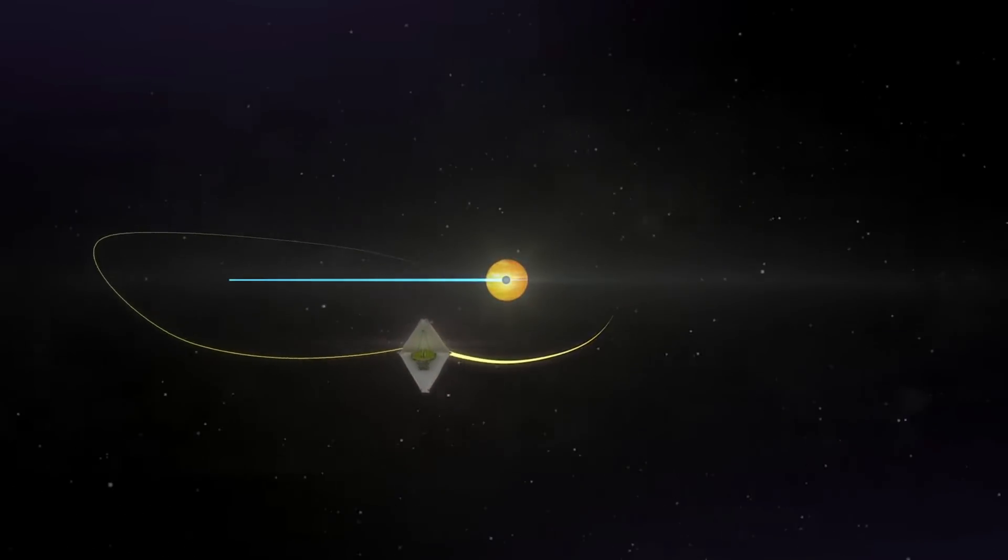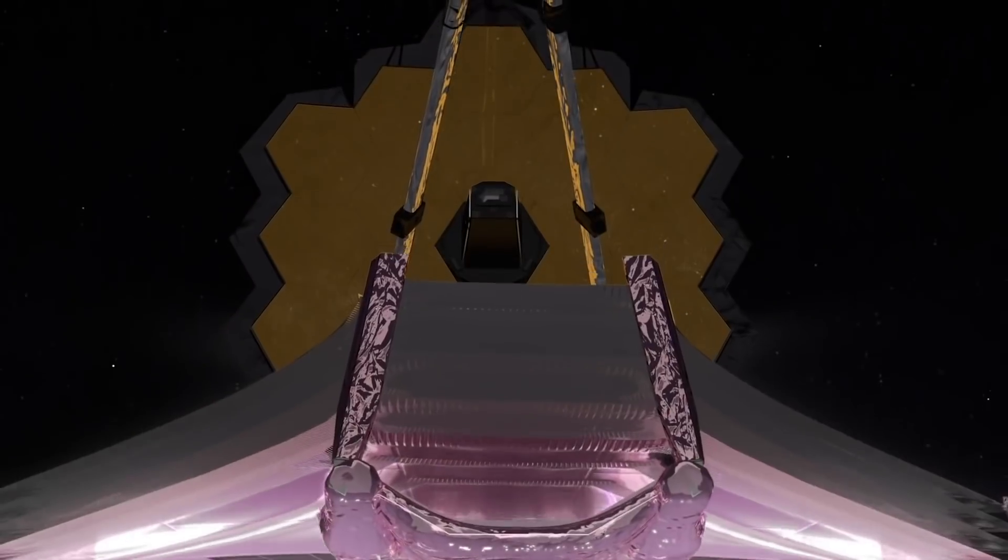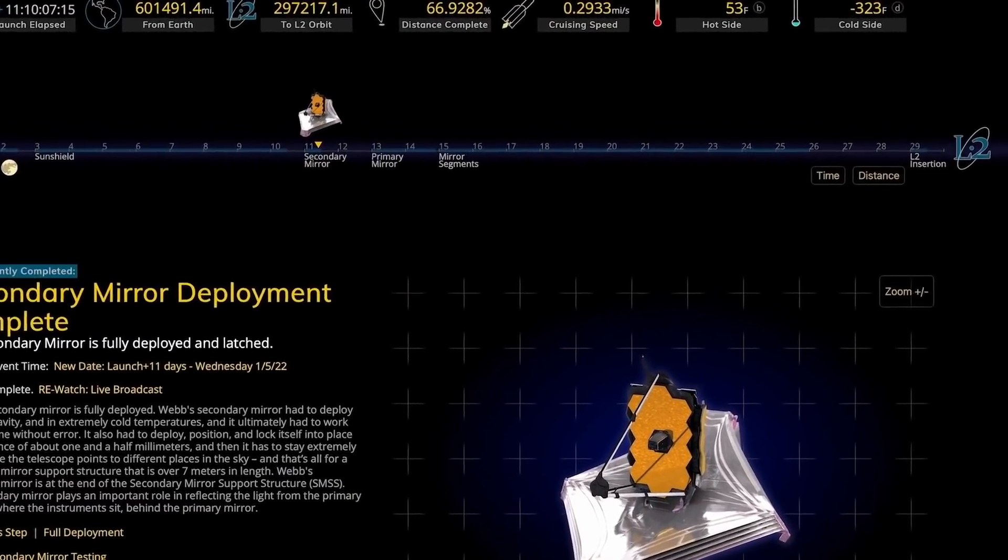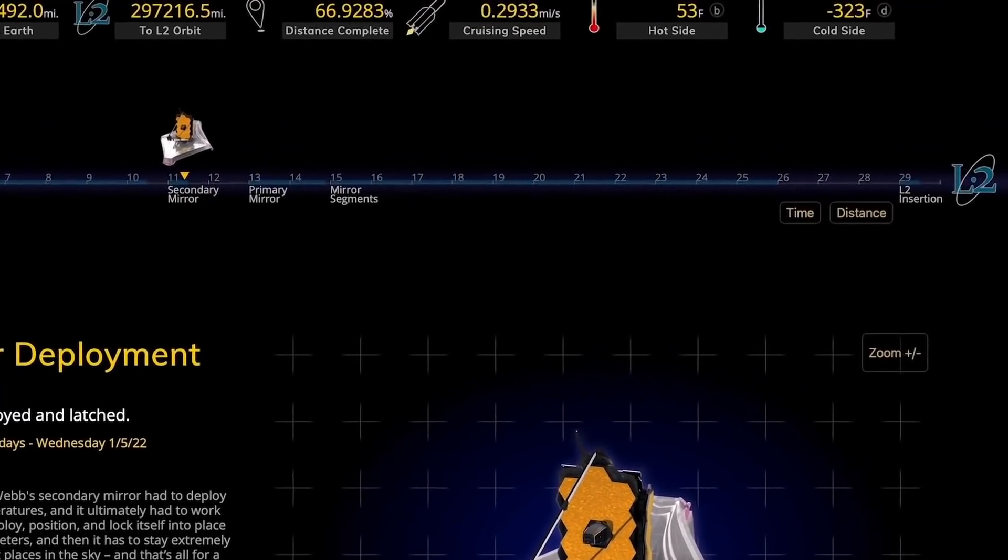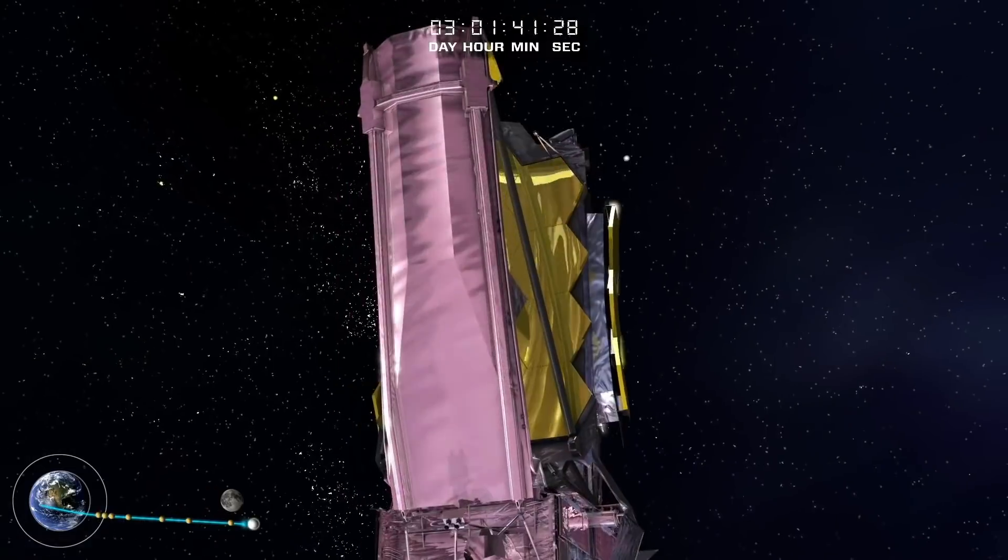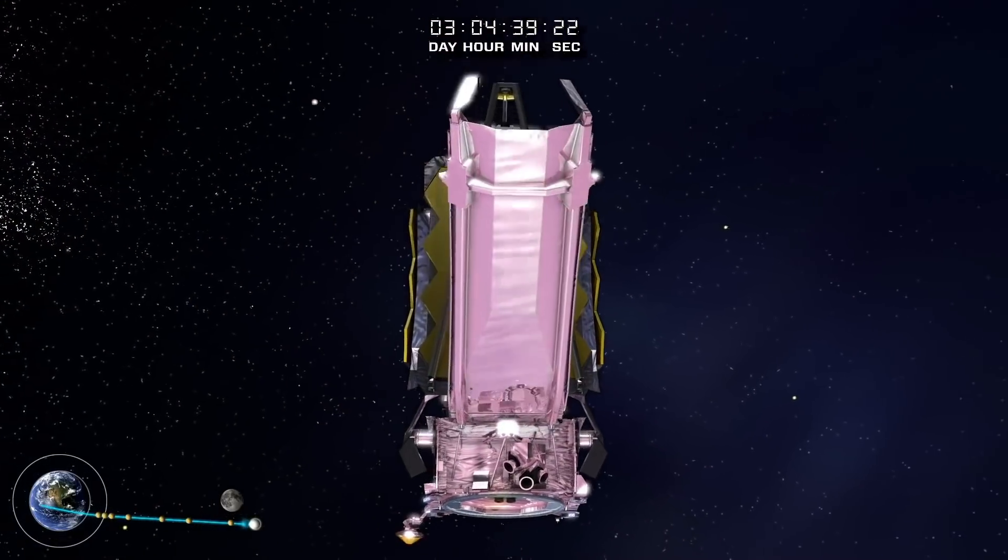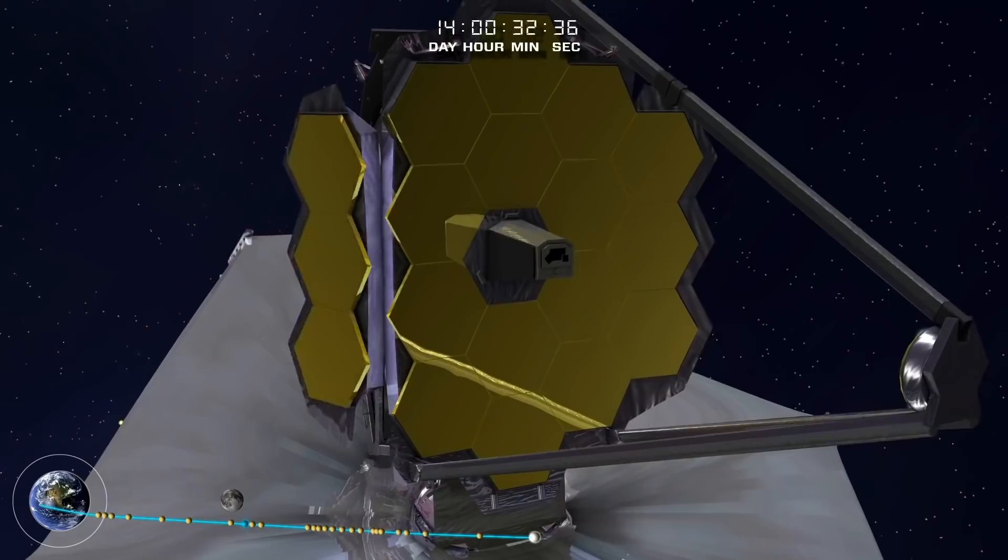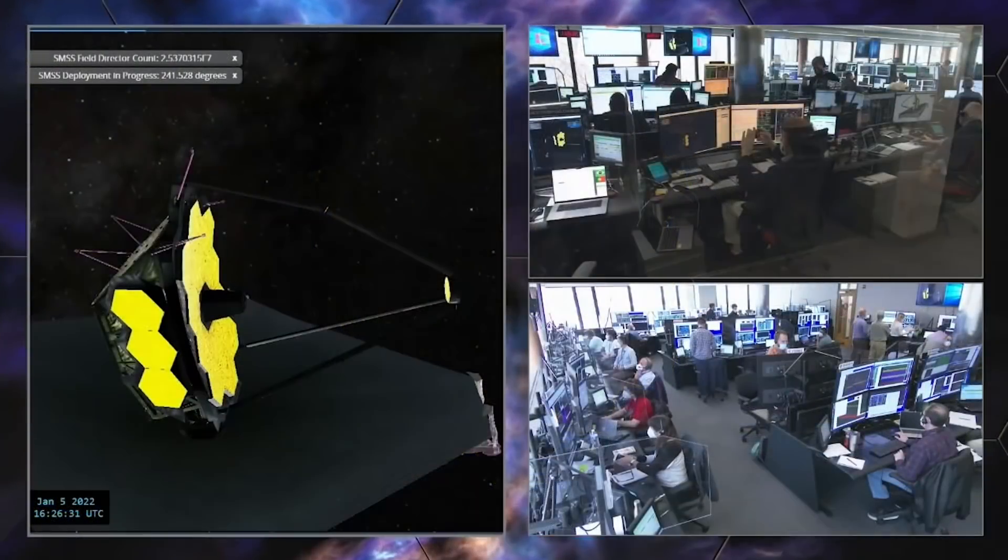But it's going to be a little while before anybody sees any data from that wonderful instrument as it has to make its journey to its location. And it also has to begin the commissioning process. The solar reflector panel has to unfold and the instruments have to be brought online. So it'll be about six months.